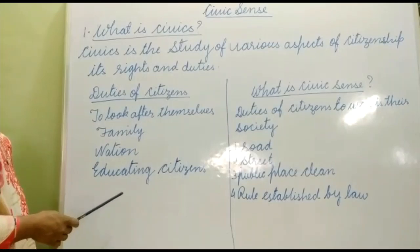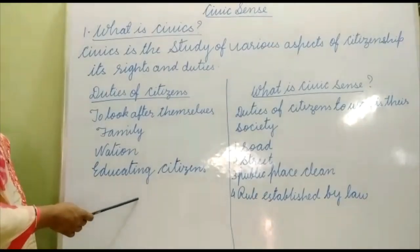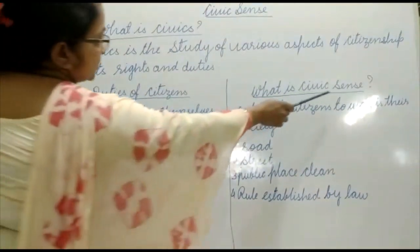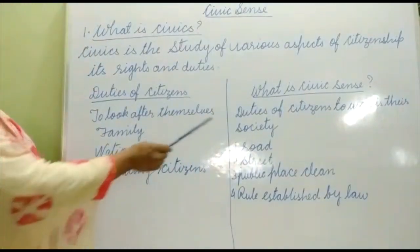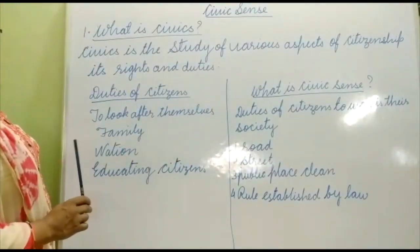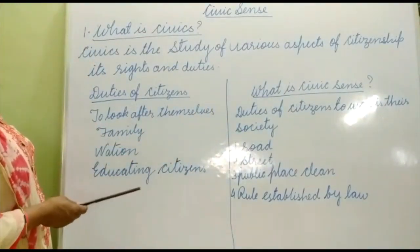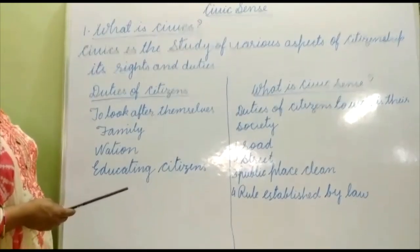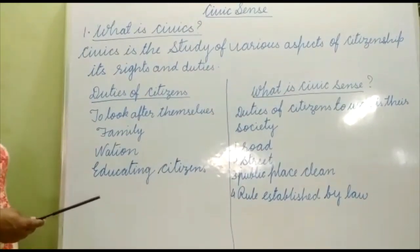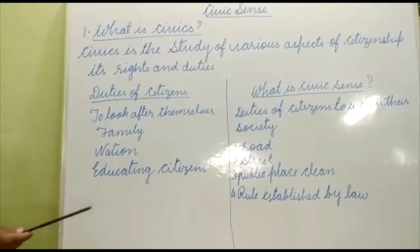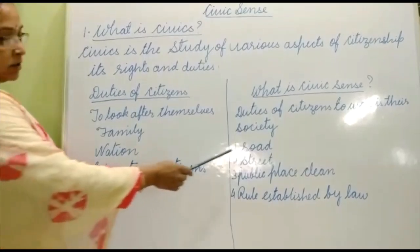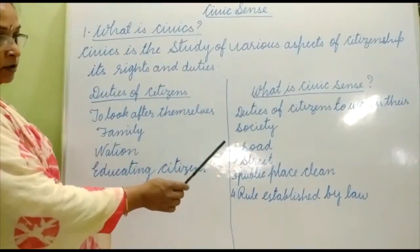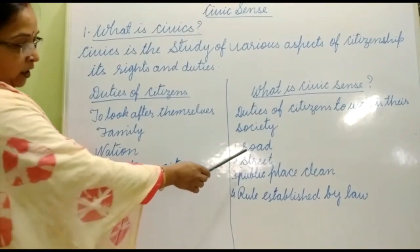Civic science is nothing but the duties of citizens towards their society. There are many duties of citizens that they have to follow for their society. The first thing is roads — they should maintain the roads that are made by the government.